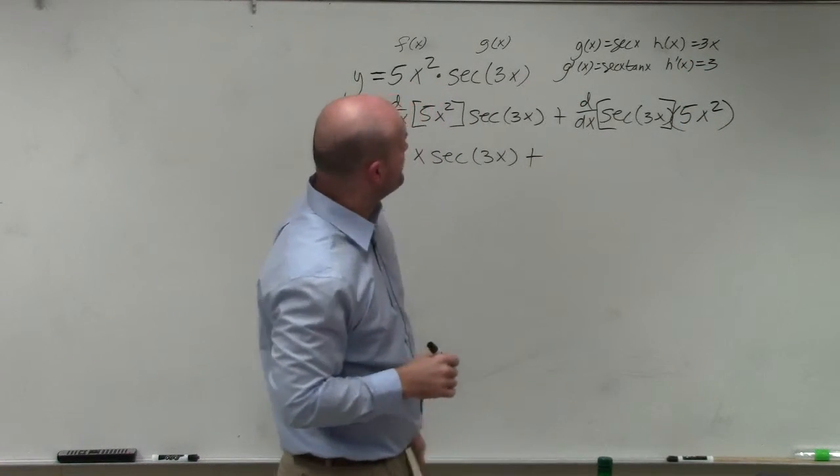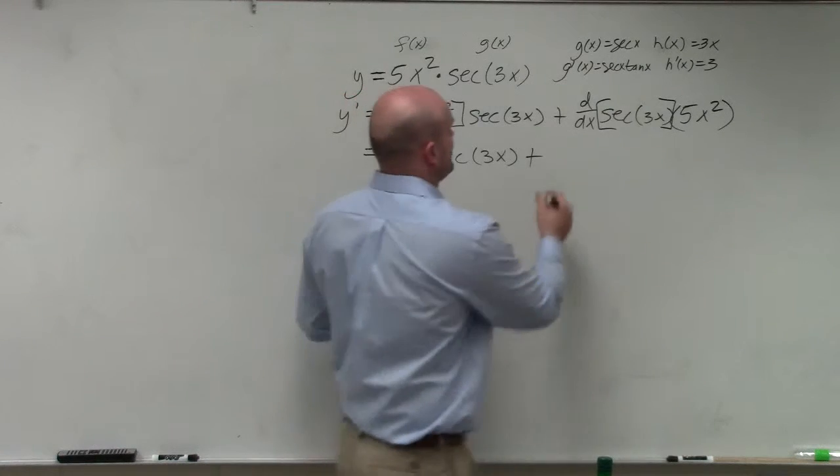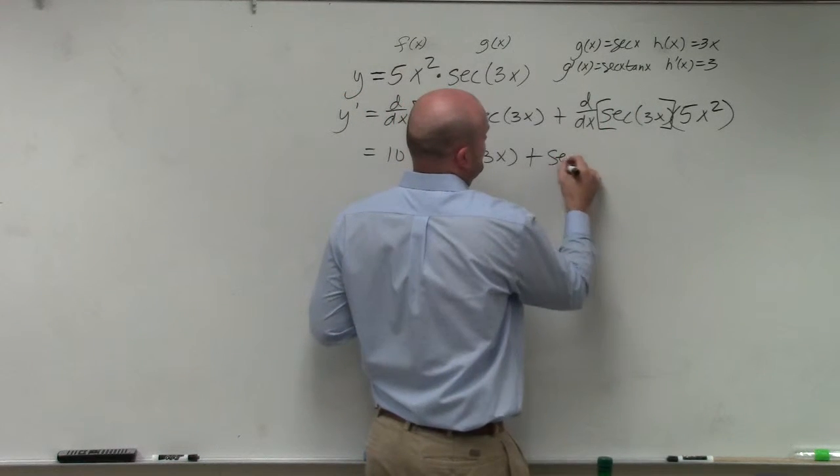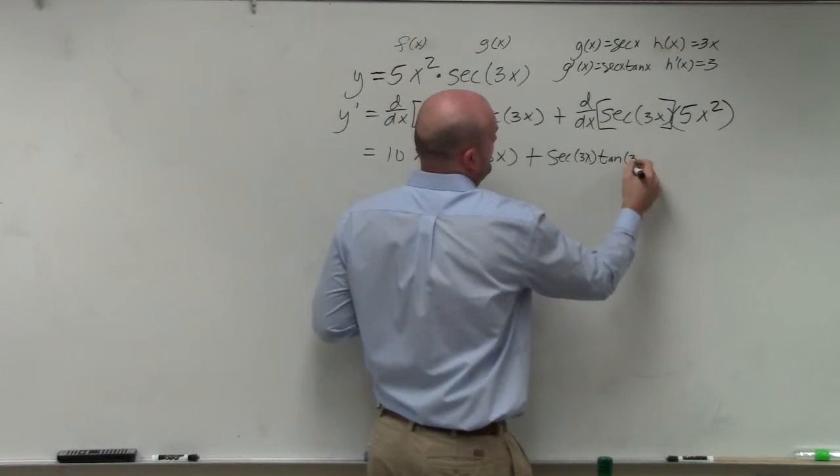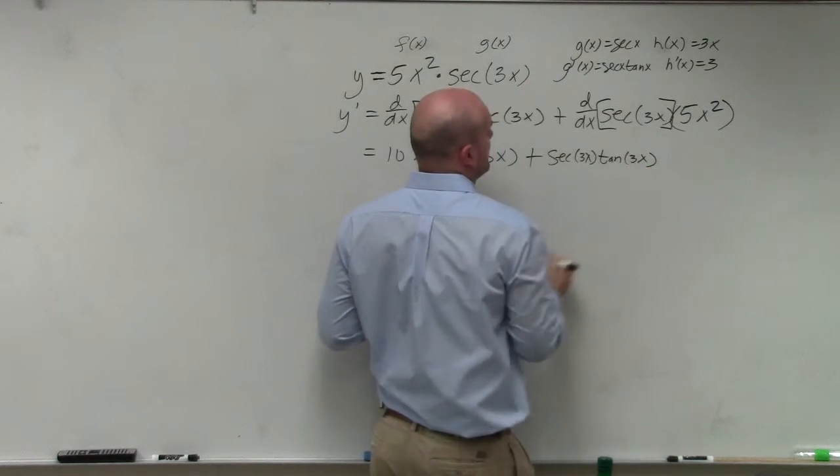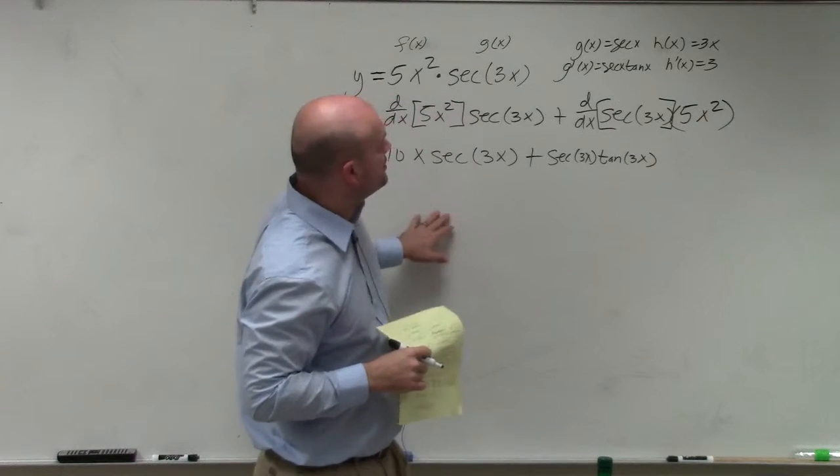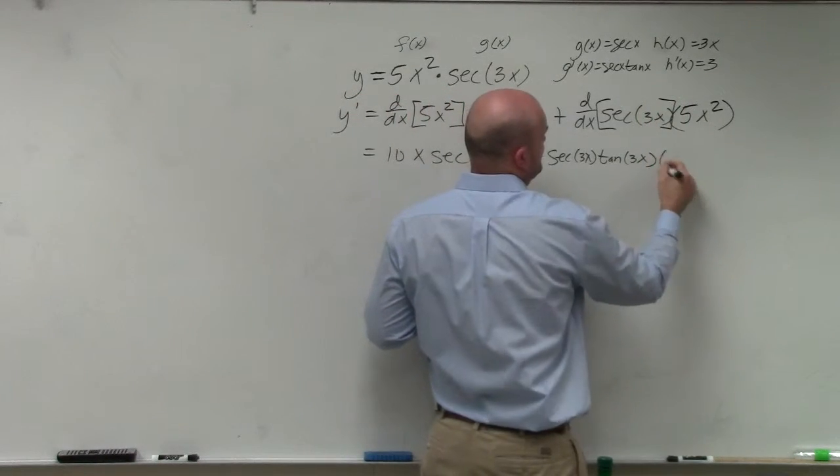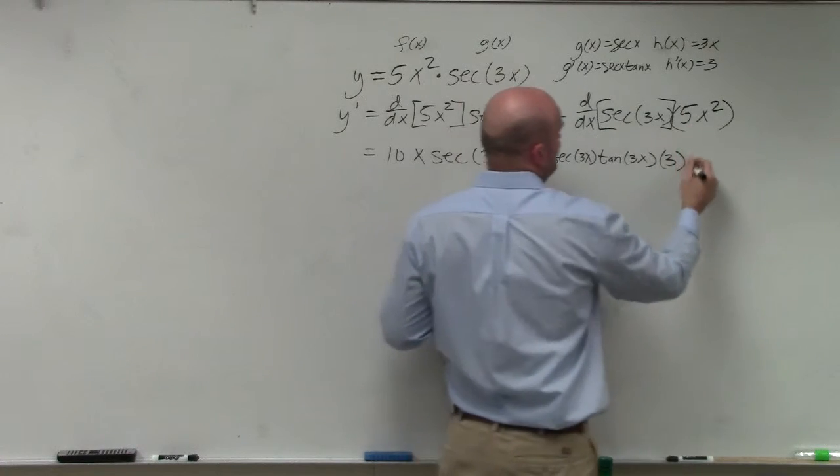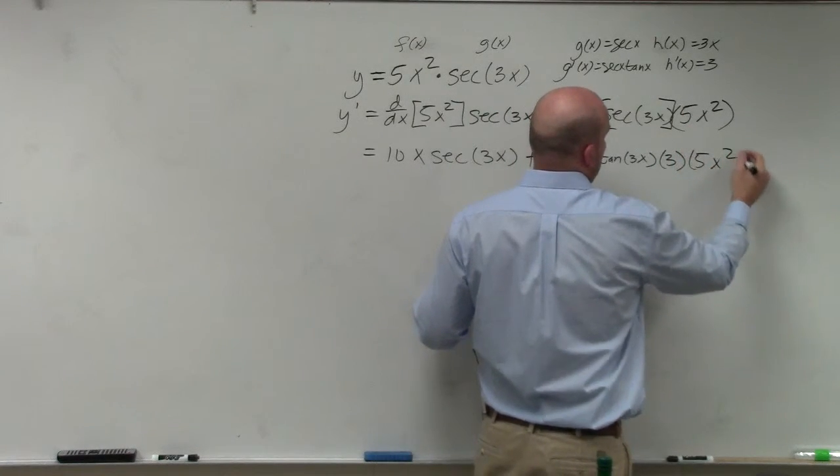So therefore, we'll take plus, let's see, that'll be secant 3x times tangent of 3x. And then that's going to be all times h prime, or g h prime, which is going to be 3. And then that's going to be times 5x squared.